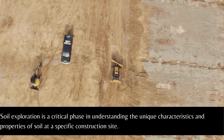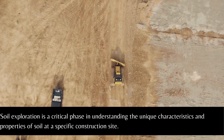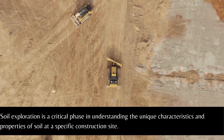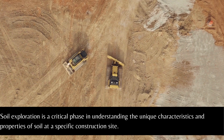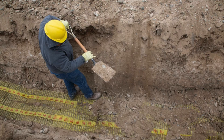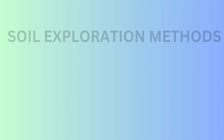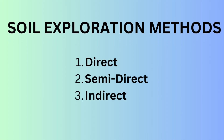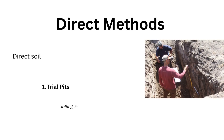As we already know, soil exploration is a critical phase in understanding the unique characteristics and properties of soil at a specific construction site. Soil exploration initially starts with site reconnaissance, followed by determining what methods or tests are to be conducted on the particular site, followed by a comprehensive report regarding the conditions of the site and their status. There are various methods of soil exploration, which are majorly categorized as direct, semi-direct, and indirect methods. We have already made a brief video regarding all the methods included in soil exploration. This video is particularly about direct soil exploration.